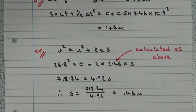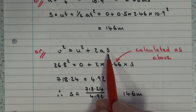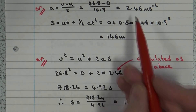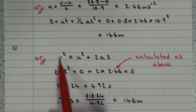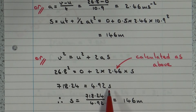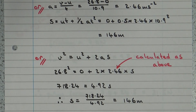The third method uses another equation of motion: v² = u² + 2as. Again, first work out the acceleration using a = (v − u) / t to get 2.46, then substitute that into v² = u² + 2as. Everything after that is rearranging. If I'm going through this quickly, pause and have a look. Again, that gives a distance of 146 metres. All four equations of motion can be used — any of these methods would be appropriate.